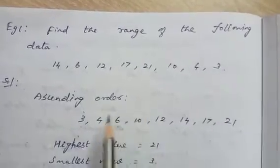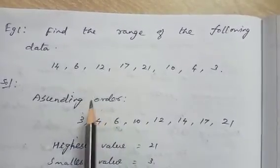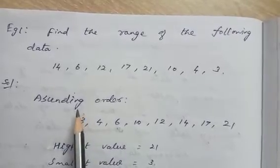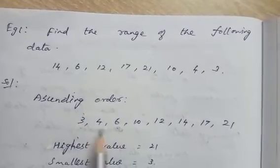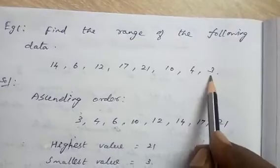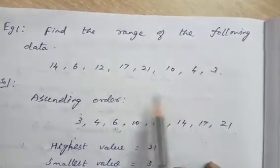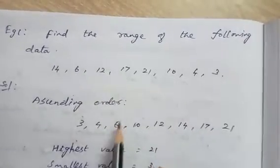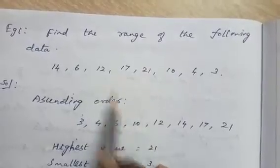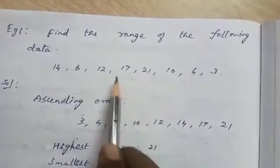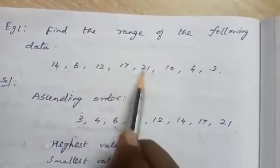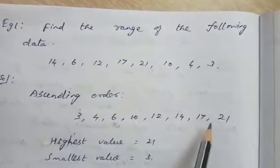First we have to write the data in ascending order — smallest number to biggest number. So the ascending order is: 3, 4, 6, 10, 12, 14, 17, and 21.